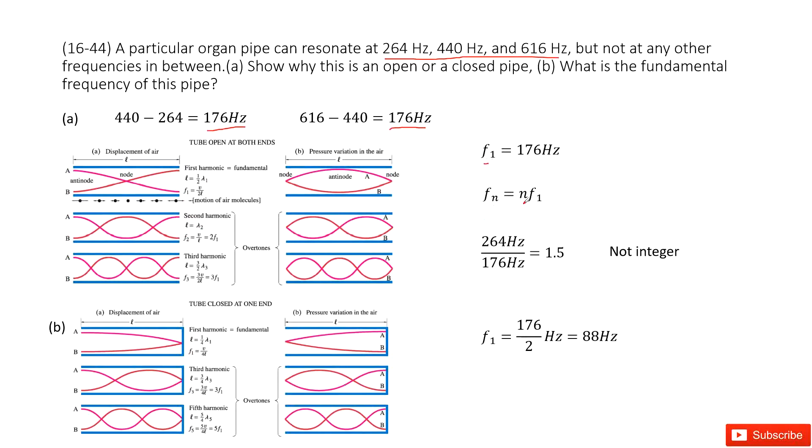Since Fn equals n times F1, and these are sequential nodes, when we divide any frequency by F1, we must get an integer n. So we use this frequency divided by F1—we must get an integral n.